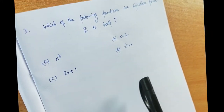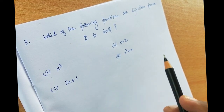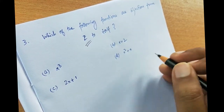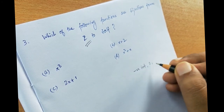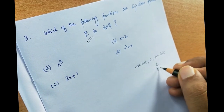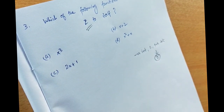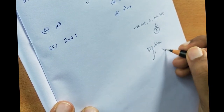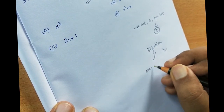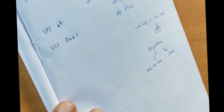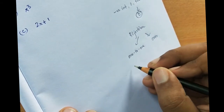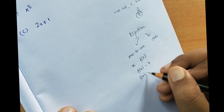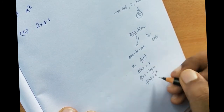The third question is about functions. We need to find which functions are bijections from Z to itself. Z is the set of integers — all negative integers, zero, and positive integers; any non-decimal number. A bijection is made up of two components: a one-to-one function and an onto function. One-to-one means for every x there is a single f(x) — examples include f(x) = x, f(x) = log x, and f(x) = eˣ.